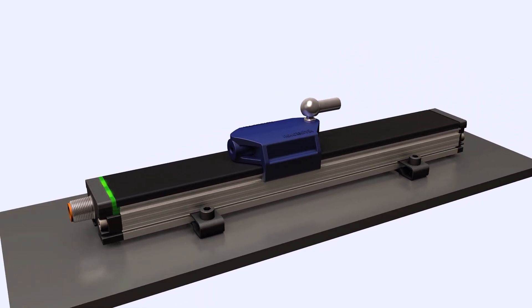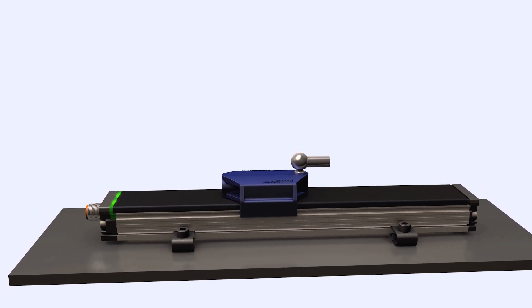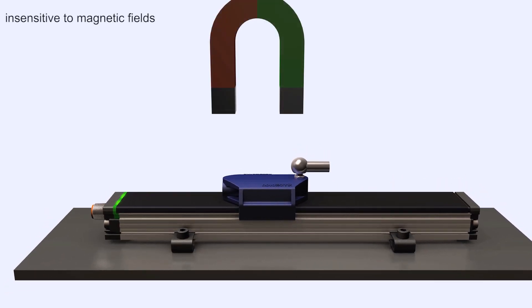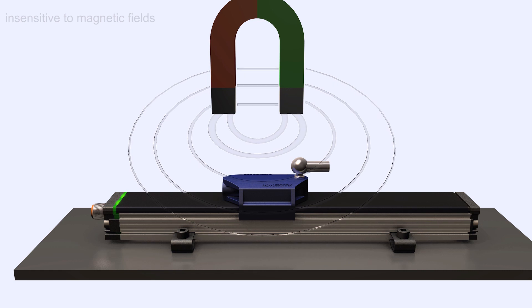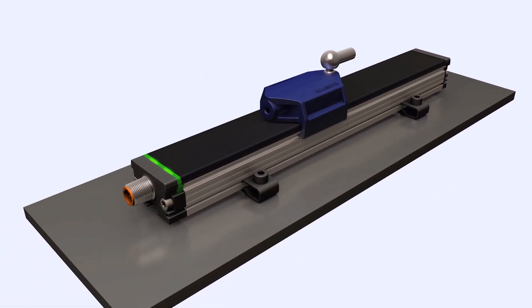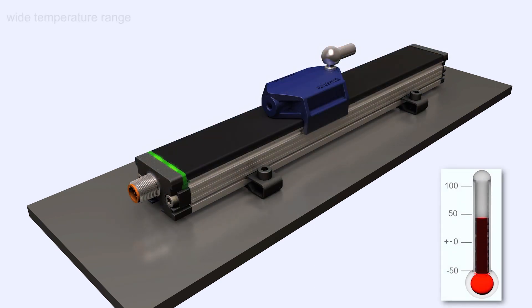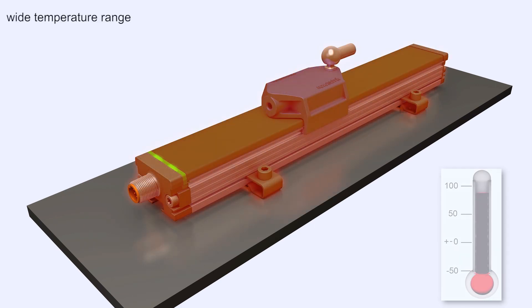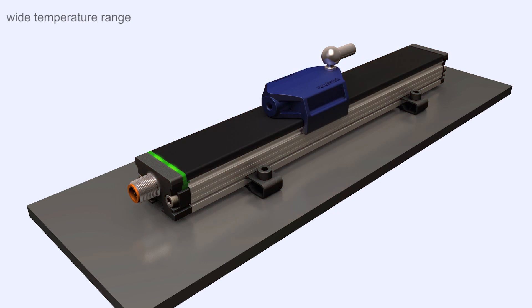NovoPad technology is insensitive to magnetic fields produced by powered devices like electric motors, hydraulic valve switches, or variable frequency drives as the position is not detected by a magnetic field but by an inductive field. The TF1 series of sensors operates over a minus 40 to plus 85 degrees Celsius temperature range.